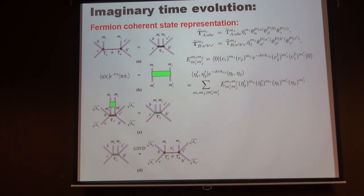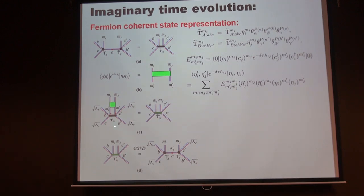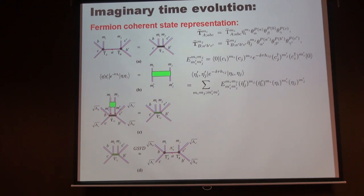We can do local updates: we write the tensor in the fermion coherent state representation, just like a usual quantum circuit in the coherent representation. For a very small δτ in one particular direction, say the horizontal direction, we get some matrix element in a Grassmann basis. Acting this circuit on the original tensor network gives a fattened tensor along the x-direction. To truncate, we use a simple update: place some weight to mimic the environment contribution. More complicated schemes, like a full environment approximation, are possible but here we use the simple update.